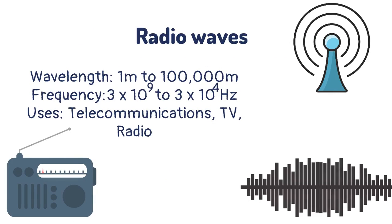Radio waves have a wavelength of between 1 meter to 100,000 meters and frequencies between 3 x 10⁹ and 3 x 10⁴. They are used in telecommunications, TV and radio.